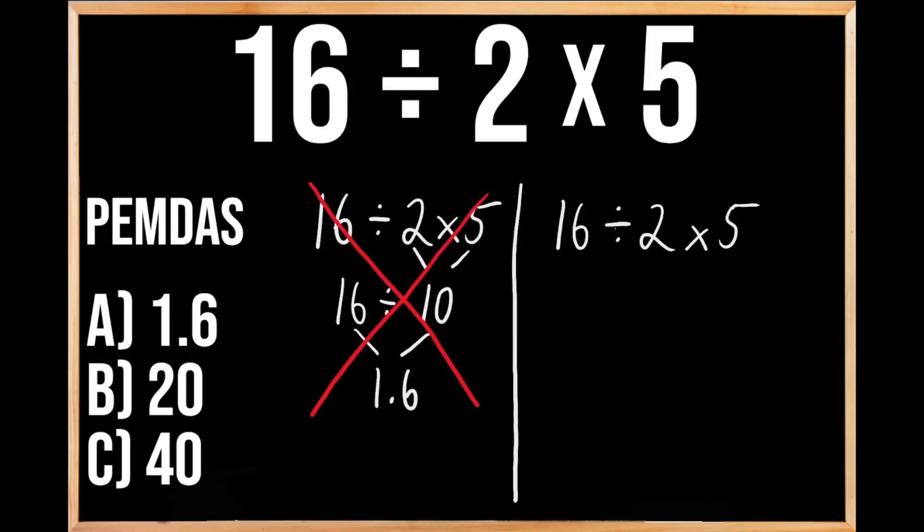So that means that first, we're going to be dividing 16 by 2, which we know is going to give us 8, and then we're going to bring down our times 5.